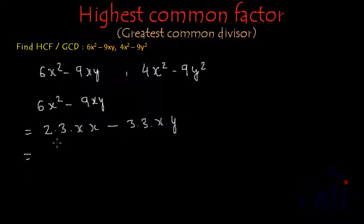And now, this 3 is common in both the terms and we have 1x common in both the terms. So, we can peacefully take 3x common from both the terms and inside the bracket we will have this 2 and this x. That is 2x minus this 3 and this y, so 3y.